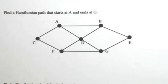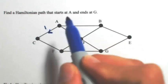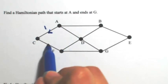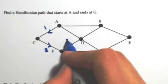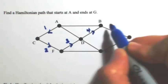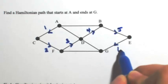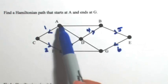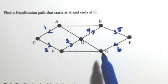So I'm going to go away from G — I'm going to go to C, so that's one. Then A to C, then I have no choice but to go to F, that's two, then D, then B, then E, and then I can end at G. This is a Hamiltonian path because I have hit all of the vertices once and only once, ending at G.